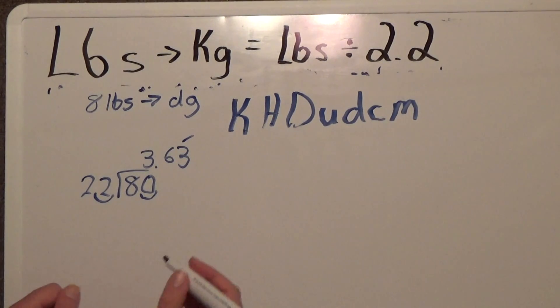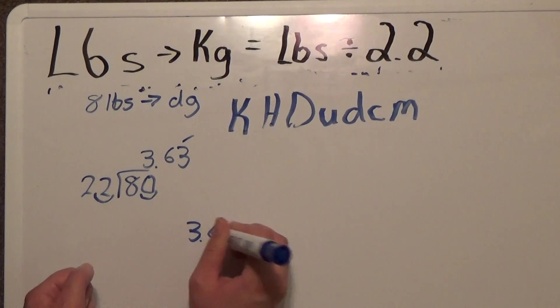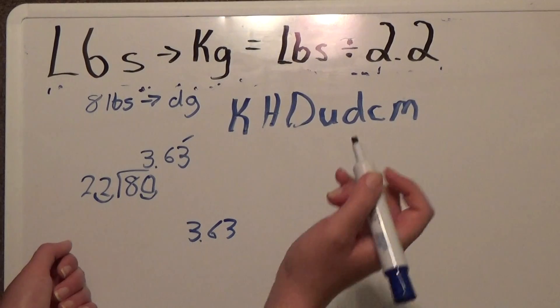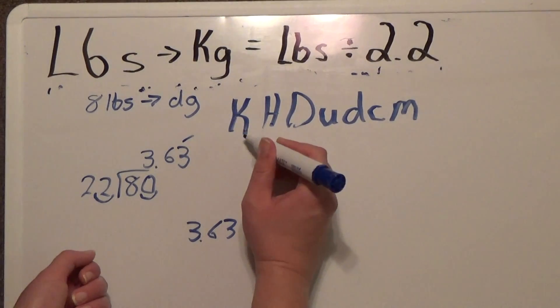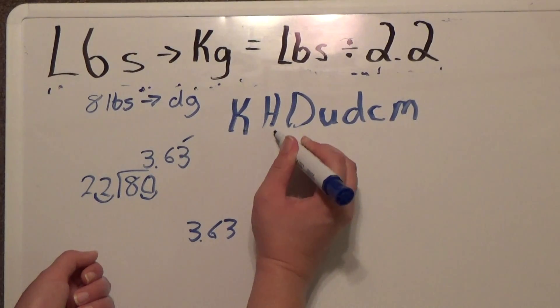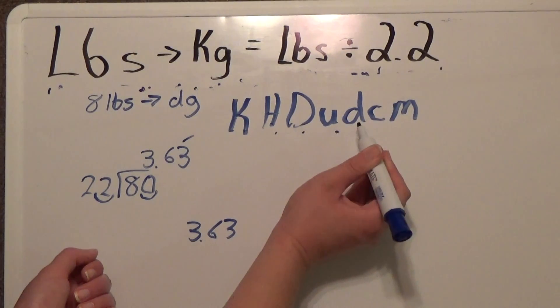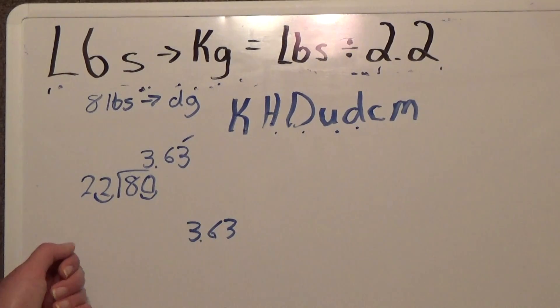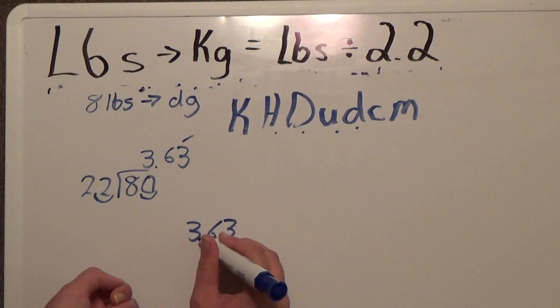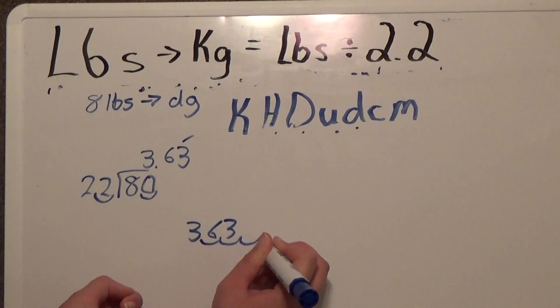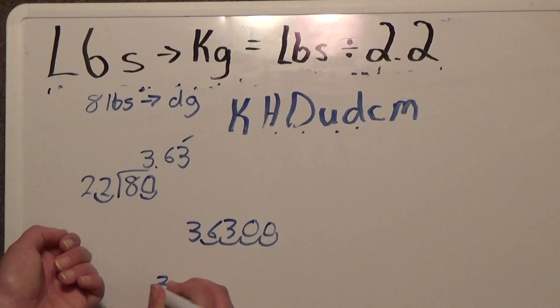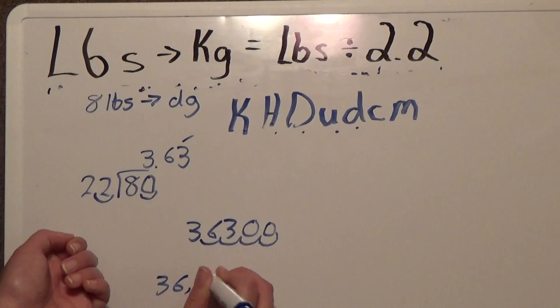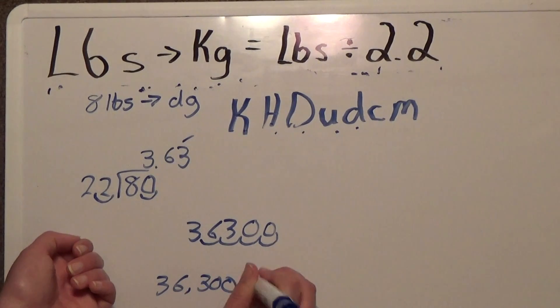So this is in kilograms, and we need to go to decigrams. So we start out here at kilo and go 1, 2, 3, 4 places to the right. So the decimal point needs to move 4 places to the right. 1, 2, 3, and 4. And the answer is 36,300 decigrams.